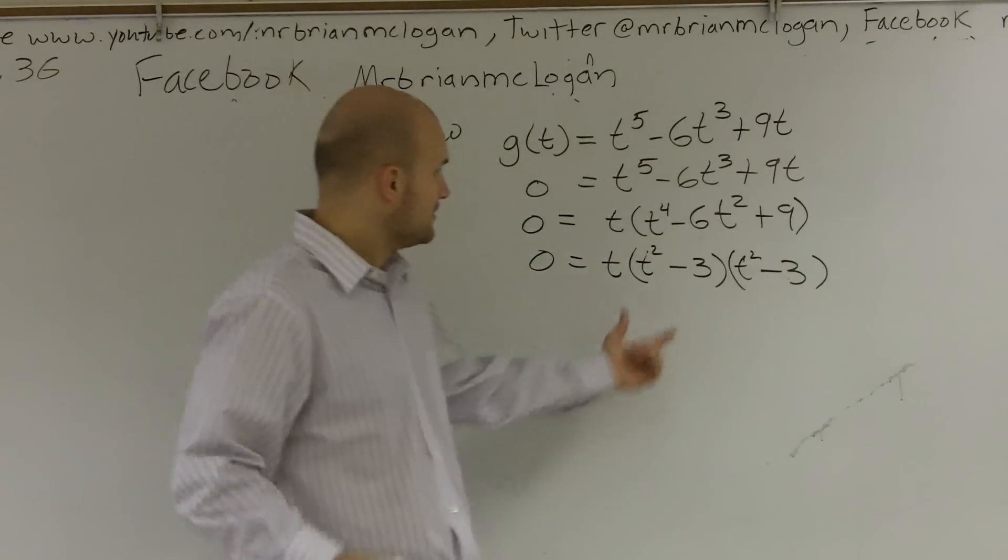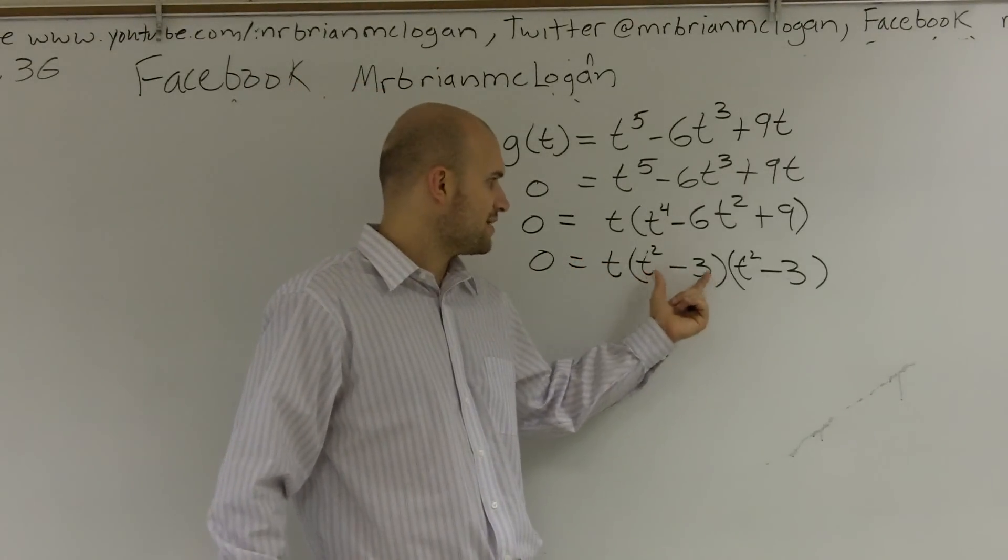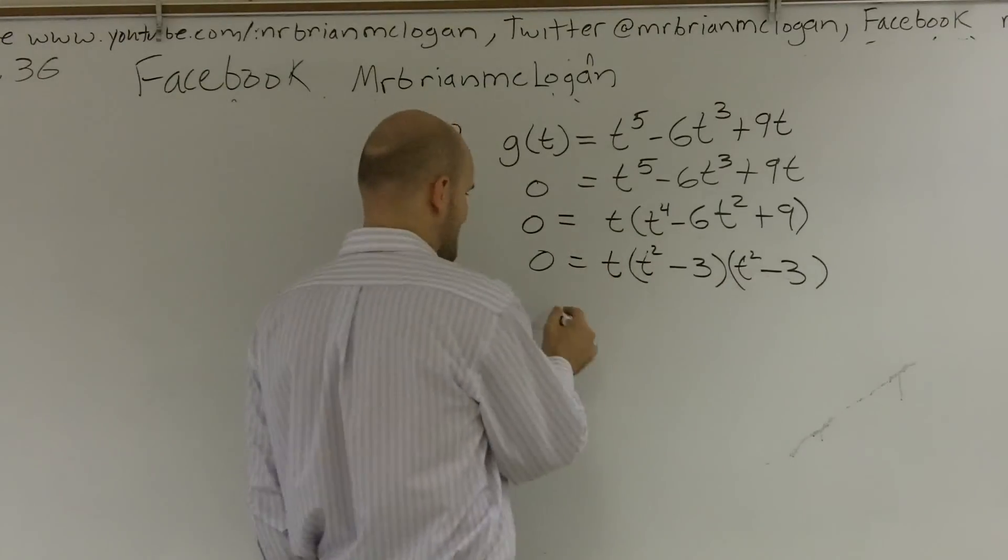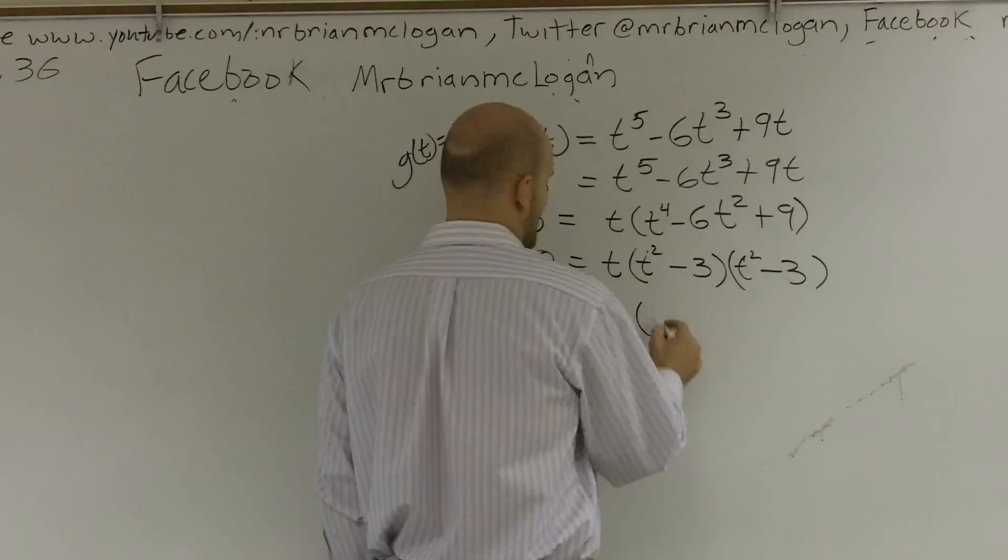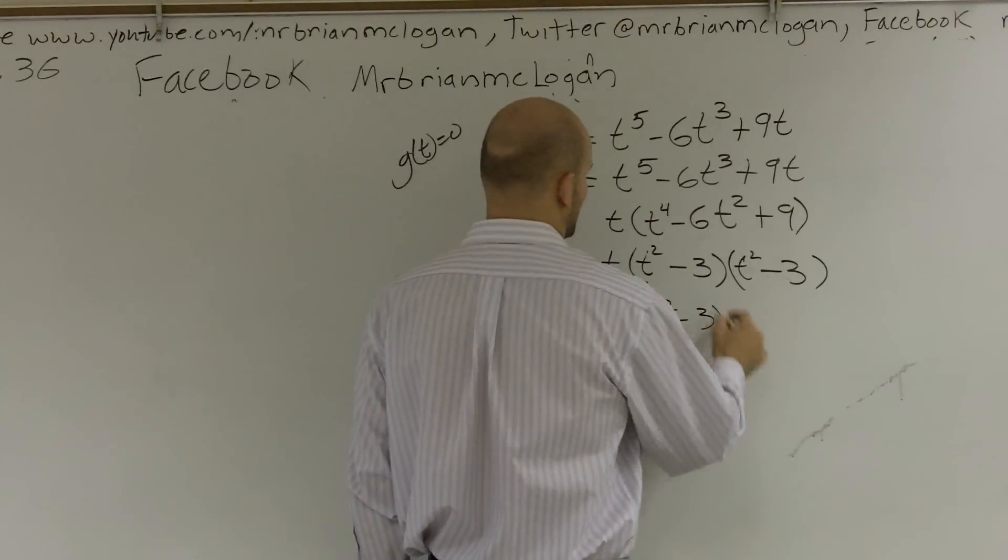An awesome thing you need to know now. Well, what do we do? t squared minus 3 times t squared minus 3 is the same thing as saying zero equals t times t squared minus 3 squared.